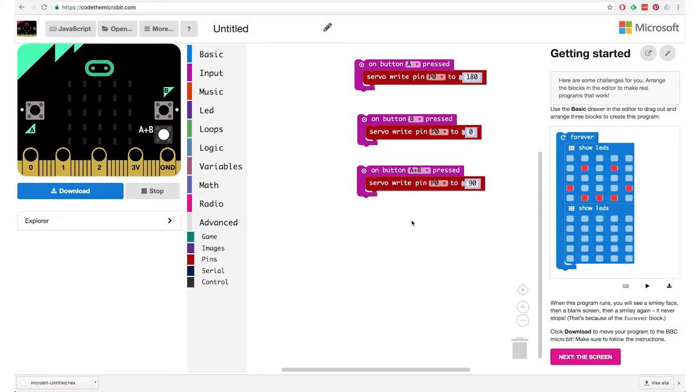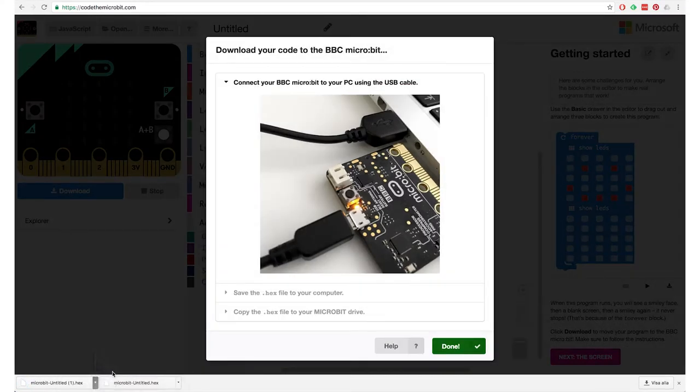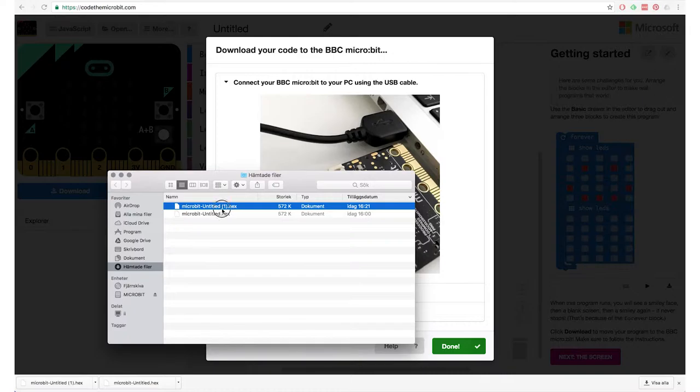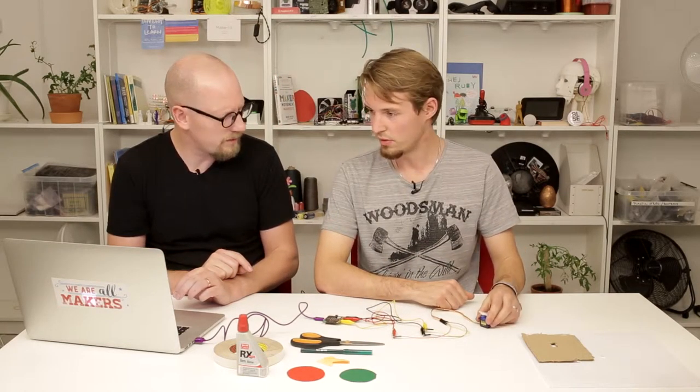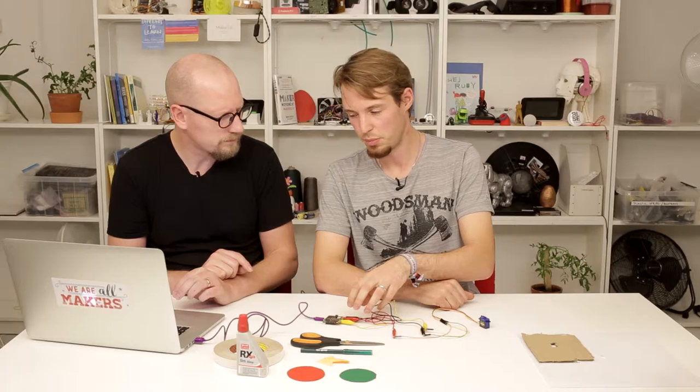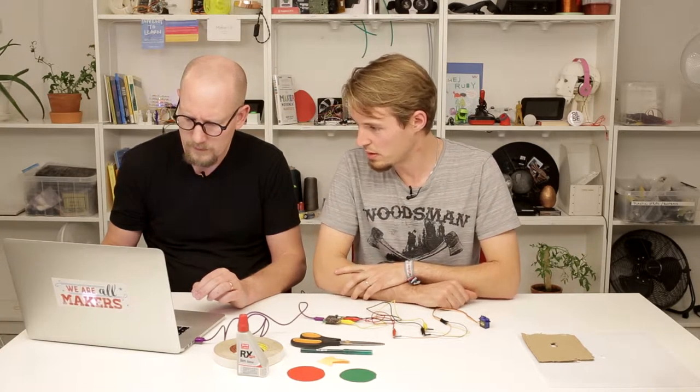Let's go in and see what we can do. As the input I want to use the buttons, so I'll go to the input. There's the 'on button A pressed'—that seems reasonable. When I press the A button I want the pin to activate. We want to control this servo and we have it connected via the pins. In the category 'pins' under advanced, you'll find blocks specifically for controlling servos.